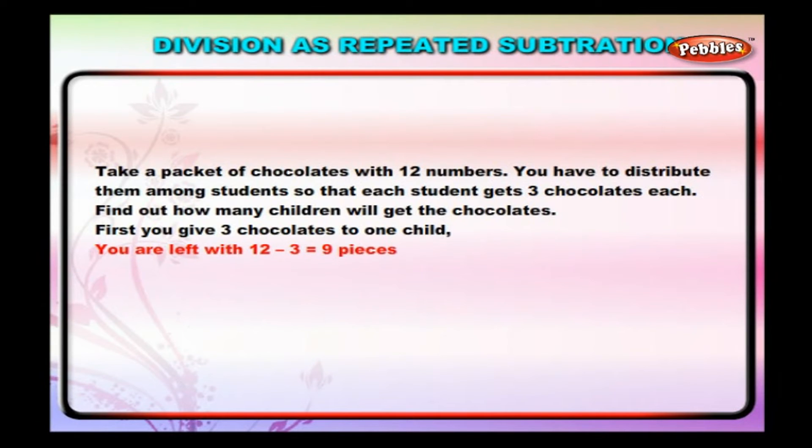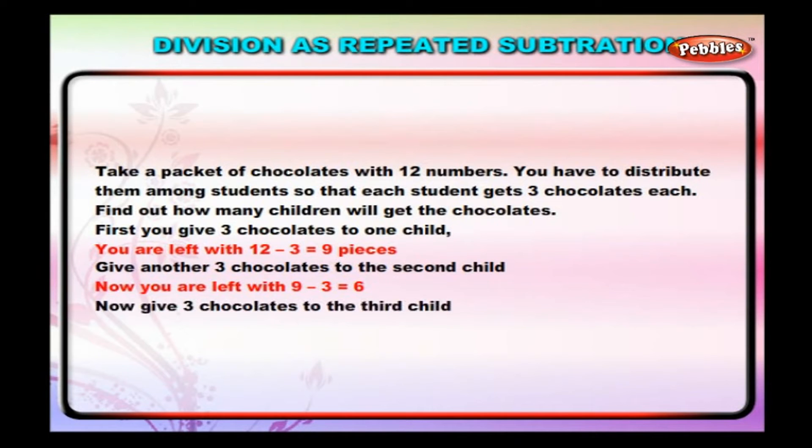You are left with 12 minus 3 which is equal to 9 pieces. Give another 3 chocolates to the second child. Now, you are left with 9 minus 3 which is equal to 6.